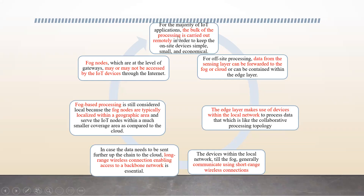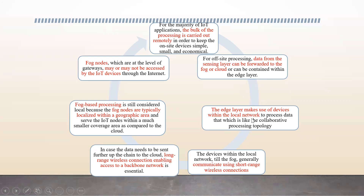For the majority of IoT applications, the bulk of processing is carried out remotely. Whether the device is simple, small, or economical, processing is done remotely. For off-site processing, data from the sensing layer is forwarded to the cloud. The cloud has contents within what is called the edge layer. This edge layer makes use of devices with local networks to perform collaborative processing.